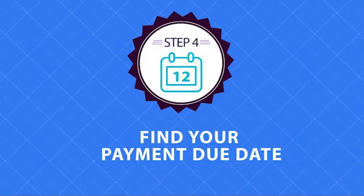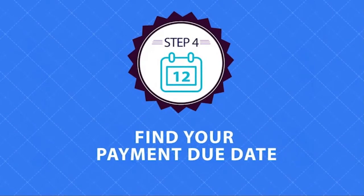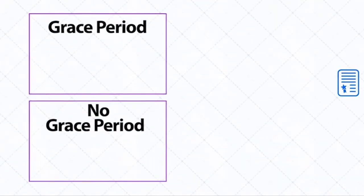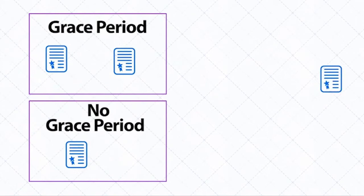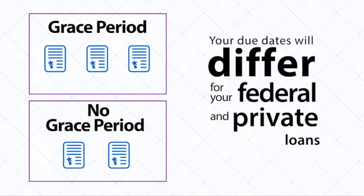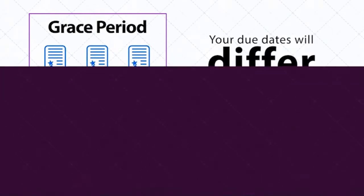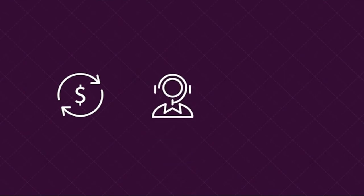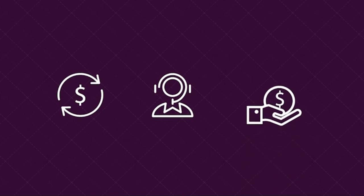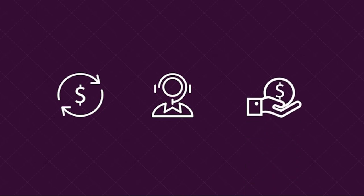Step four: find your payment due date. Some of your loans may have a grace period and some may not. Your due dates will differ for your federal and private loans. Consider setting up automatic payments — talk to your loan servicer to see if an interest rate reduction is possible if your monthly payments are automatically deducted from your checking account.